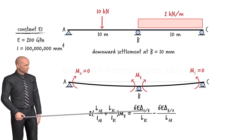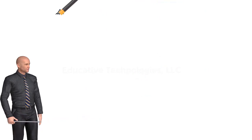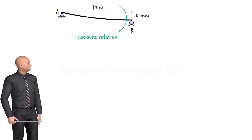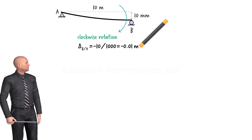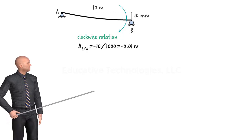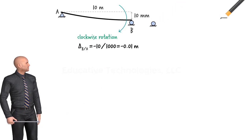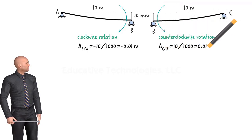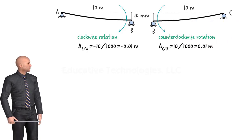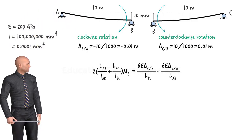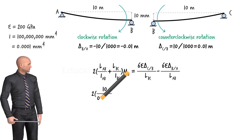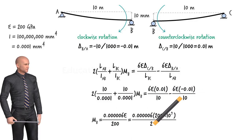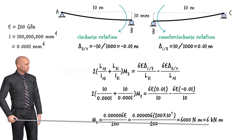To calculate delta CB and delta BA, we examine each beam segment separately. In segment AB, the downward settlement of the support at B causes the segment to rotate clockwise, corresponding to a negative delta. Therefore, delta BA equals negative 10 millimeters, or negative 0.01 meter. The same support settlement, however, makes segment BC rotate counterclockwise, so delta CB is positive — it equals 0.01 meter. Substituting these values along with E and I into the simplified three-moment equation and solving for MB, we get MB equals 6 kilonewton meters.